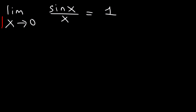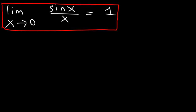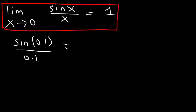Let's confirm it. A nice, simple technique to evaluate any limit, if you have access to a calculator, is to plug in a number that's very close to what x is approaching. In this case it's approaching 0, so let's try 0.1. Make sure your calculator is in radian mode. Sine of 0.1 divided by 0.1 equals 0.998, which is very close to 1.